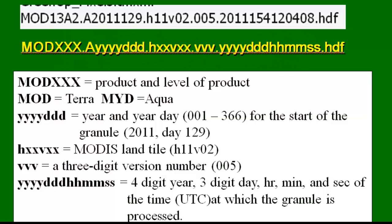When you download the data it comes as an HDF file with a structured name. MOD stands for the MODIS sensor onboard Terra; 13 is the product number for the vegetation index; A2 indicates the product level. The name also includes the year, the Julian day, and the tile — for example H11V02 for interior Alaska — and the version number, in this case version 5.